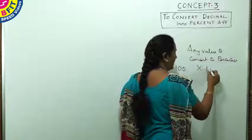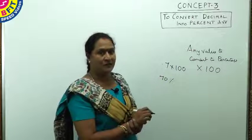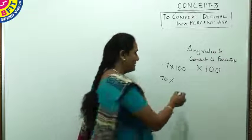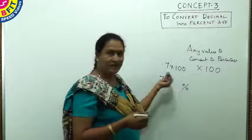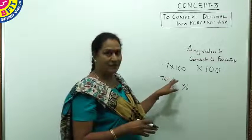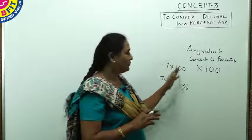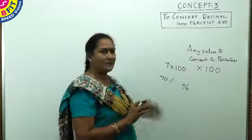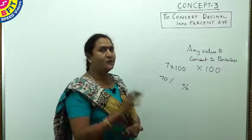As I told you earlier, percentage means — you can remember — it is 1 with 2 zeros. As you are inserting this percent symbol, you can imagine that you are multiplying it with 100. So any number, any value, to convert to percentage, whether it is a fraction, an integer, or a decimal, multiply it with 100.